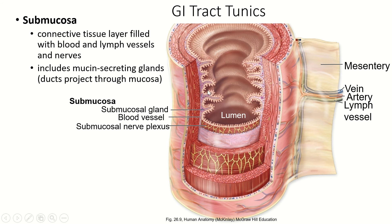The submucosa also has lots of lymphatic vessels running through it, carrying fats from the digestive system, and it has mucin-secreting glands that project through the mucosa to produce mucus. The mucosa also has goblet cells which make mucus. There's lots of mucus in your digestive tract so that food can keep moving along and to protect the cells from any sharp or acidic foods in the lumen.